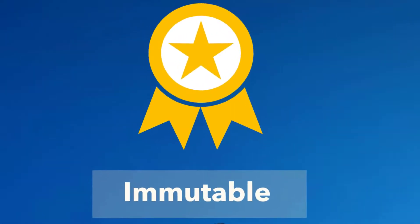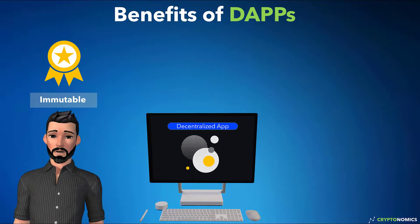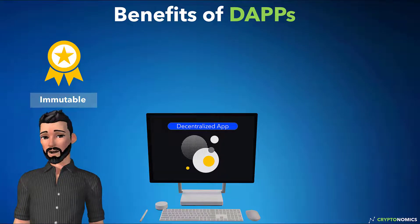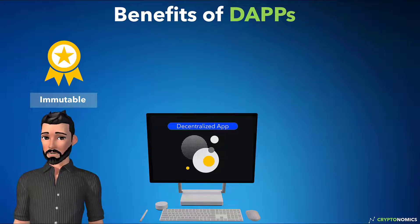DAPs are immutable. Nobody can change any information once it's on the blockchain, where no one person or group has control. Malicious actors cannot force transactions or other data that has already been made public.